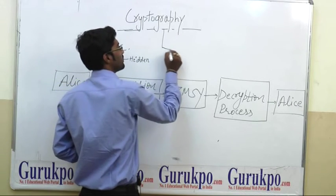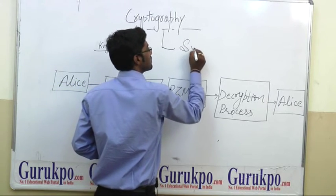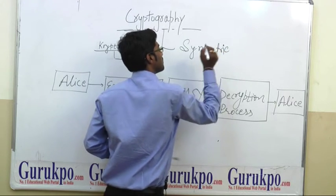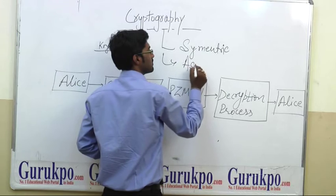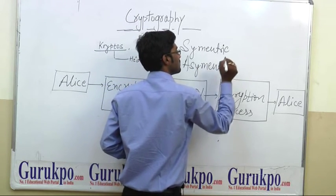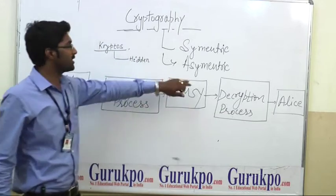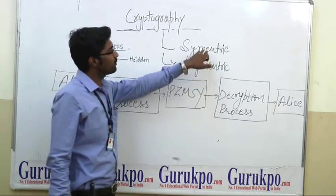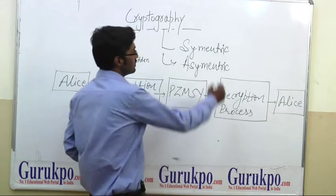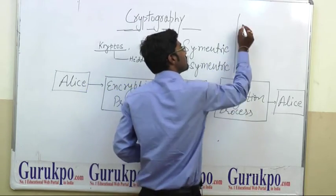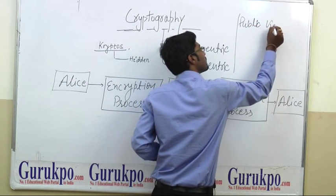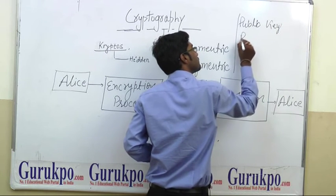There are two types of cryptography: symmetric and asymmetric key cryptography. In symmetric and asymmetric, there is the concept of public key and private key.